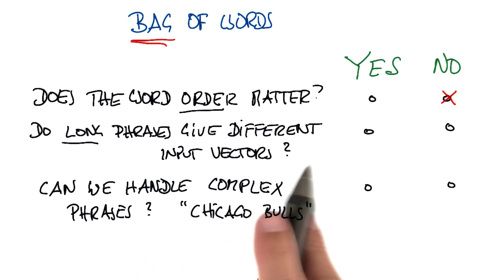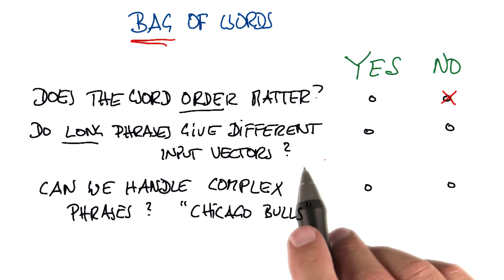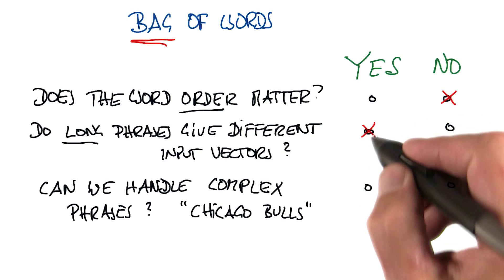Long phrases do give different vectors. Suppose we take the same email and duplicate it, all the counts go up by a factor of two, and it's going to be a different input vector. So to some extent, you're biasing yourself to also encode the length of your text, not just the frequency of the words. The answer would be clearly yes.